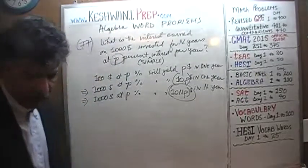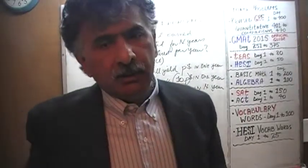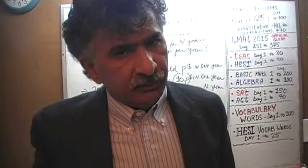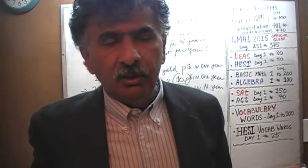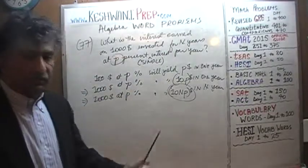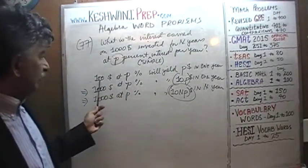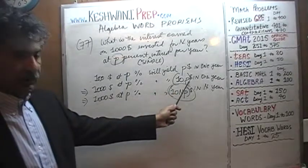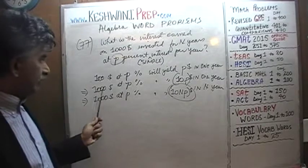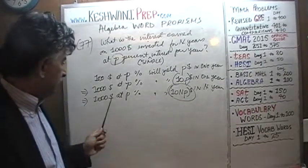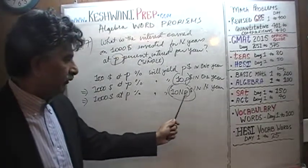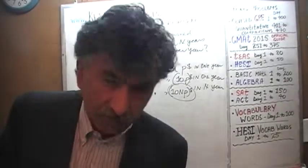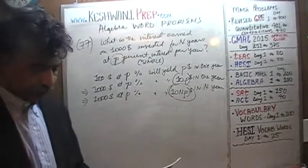There is your final answer. The final answer is: how much interest will we earn if we invest $1,000 for N years at P%? The answer is 10 × N × P. Why 10? Because $100 earns P dollars, therefore $1,000 earns 10 times P dollars in one year, and for N years that becomes 10 × N × P dollars.